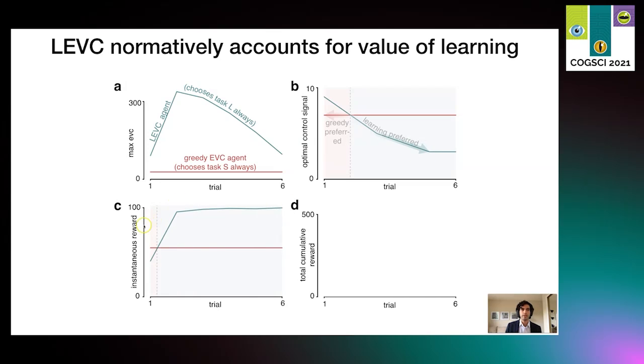Third, looking at instantaneous reward. Again, although the greedy EVC agent has a higher initial instantaneous reward, the LEVC agent quickly overpasses it, becoming preferable by the end of the task. And finally, providing the strongest argument for the rationality of choosing to learn, although the greedy EVC agent has a higher initial cumulative reward, the LEVC agent acquires more reward over the lifetime of the simulation, indicating that indeed it is rational to take into account the value of learning.